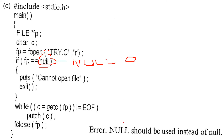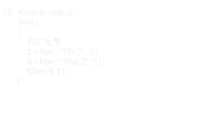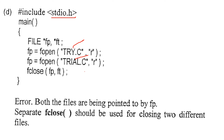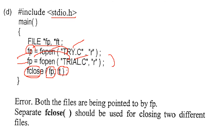Then we have stdio.h, try.c, try1.c opened in read mode. Both files are open, no problem with fp — this will be assigned to fp, then again this will be assigned to fp. The problem is in fclose: both files are being pointed to by fp. There is no error as such, but for fclose we have to use it separately for fp and ft — these two cannot be done together.